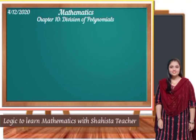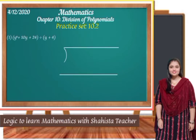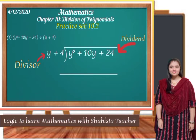Welcome to maths class. Let's solve practice set 10.2 of division of polynomials. Question number 1: y² + 10y + 24 divided by y + 4. So y + 4 is the divisor and y² + 10y + 24 is the dividend. Now we have divisor and dividend, so let's divide.